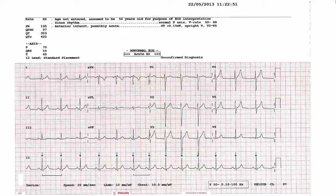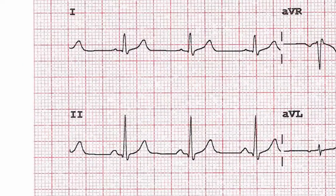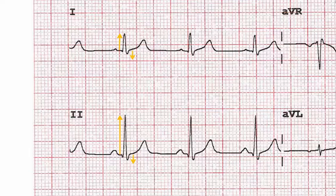After rate and rhythm, we'll consider axis. Calculating the axis is something some people find quite difficult, so I'll point you in the direction of a separate tutorial regarding calculating axis. The simplest way considers leads 1 and 2 alone, so that's where we will always look. Here, the QRS complex goes up more than it goes down — i.e. it's positive in lead 1 — and positive in lead 2. Positive complexes in both lead 1 and lead 2 give a normal axis.